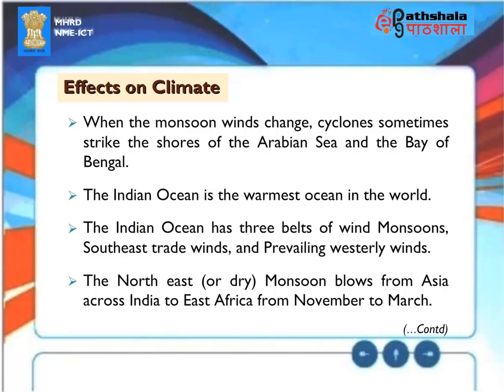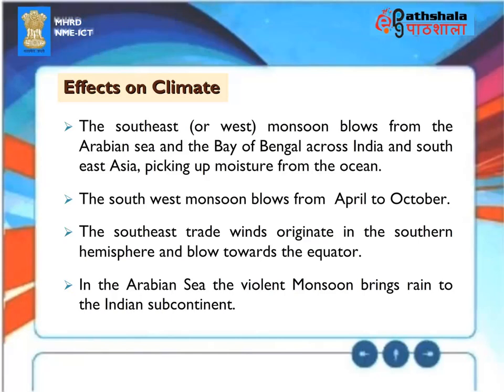Effects on Climate. When the monsoon winds change, cyclones sometimes strike the shores of the Arabian Sea and the Bay of Bengal. The Indian Ocean is the warmest ocean in the world. The Indian Ocean has three belts of wind: monsoons, southeast trade winds, and prevailing westerly winds. The northeast or dry monsoon blows from Asia across India to East Africa from November to March. The southeast or west monsoon blows from the Arabian Sea and the Bay of Bengal across India and Southeast Asia, picking up moisture from the ocean. The southwest monsoon blows from April to October. The southeast trade winds originate in the southern hemisphere and blow towards the equator. In the Arabian Sea, the violent monsoon brings rain to the Indian subcontinent.